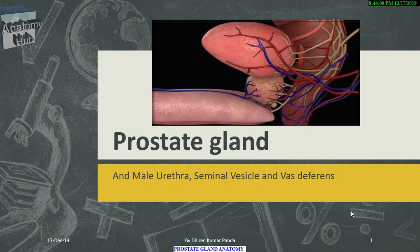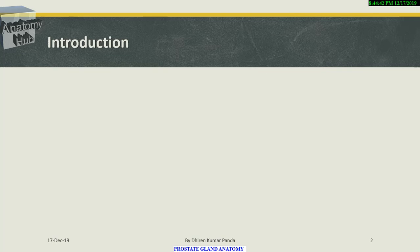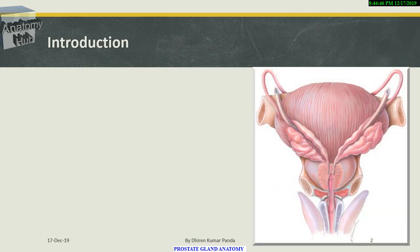The prostate gland is an encapsulated fibromuscular and glandular solid organ which mainly surrounds the beginning of the male urethra. Its thin and milky alkaline secretion neutralizes the acid secretion of the vagina and is added to the seminal fluid at the time of ejaculation. It is about 4 cm wide, 3 cm long, and 2 cm thick, weighing about 8 grams.